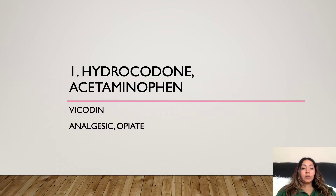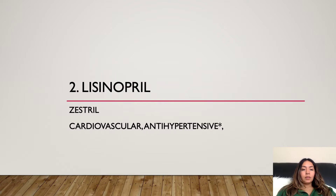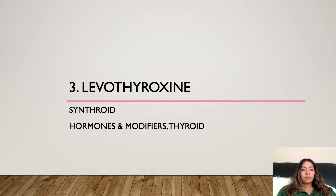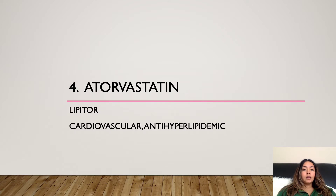Number one: Hydrocodone/Acetaminophen, brand name Vicodin, class is analgesic opiate. Number two: Lisinopril, brand name Zestril, cardiovascular and antihypertensive class. Number three: Levothyroxine, brand name Synthroid, class is hormones and modifiers, thyroid. Number four: Atorvastatin, brand name Lipitor, cardiovascular and antihyperlipidemic class.